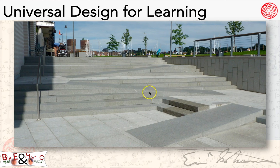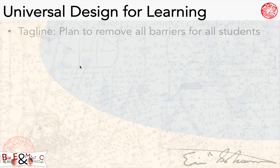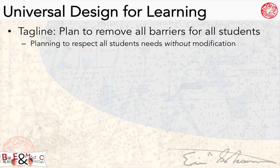In another example, here is a nice set of stairs, but also built into the design is a place for someone in a wheelchair to move up and down without needing an additional mechanical lift or anything excessive. In short, the accommodations are already existing in the original plan. This connects very well to Universal Design for Learning, where we talk about removing all barriers for students, perhaps even before we know who our students are or what their needs will be.